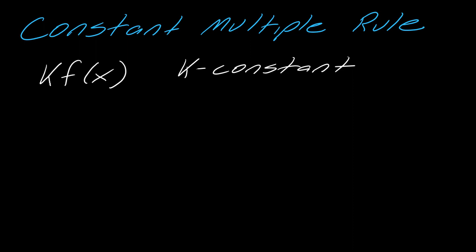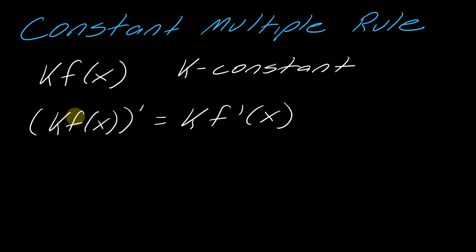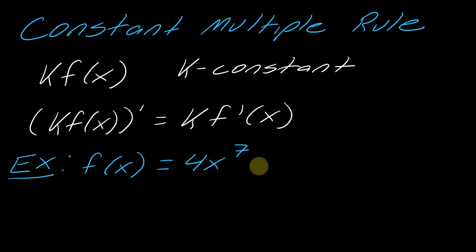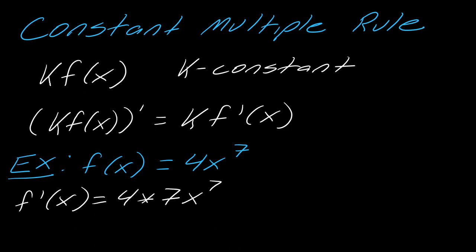Moving on to the constant multiple rule. You have some number k times f(x), and to take the derivative, nothing really happens to the constant — you just take the derivative of the actual function. For example, with 4x^7, the 4 stays and I bring the 7 down then subtract 1, so this ultimately equals 28x^6, and that would be the derivative.